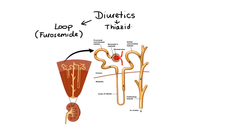Secondly, we have thiazide diuretics such as hydrochlorothiazide, which also reduce reabsorption of sodium chloride in the kidneys, but to a much smaller degree than loop diuretics. This leads to initial decrease in intravascular volume, decrease in cardiac output and ultimately lower blood pressure. However, the long-term effects on blood volume are minimal and sustained antihypertensive effects are thought to be produced by thiazide-induced vasodilation.